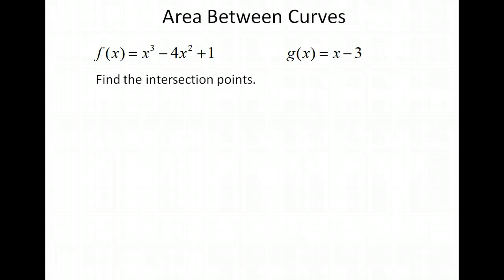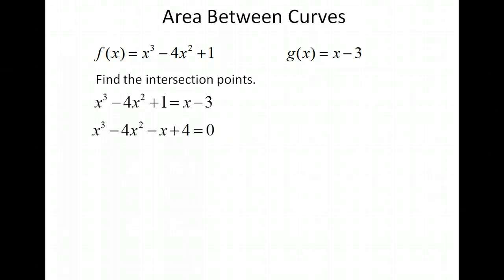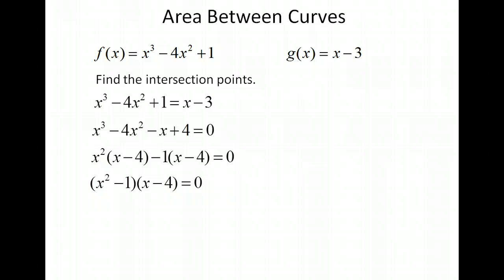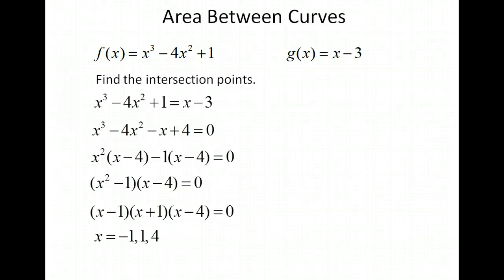Let's go ahead and find our intersection points. We can do that pretty easily by setting the two functions equal to each other and then isolating x. So we're going to bring our x minus 3 over to the other side. For this particular function, we can factor this out — factoring x squared out of the first two terms, negative 1 out of the last two terms, and then regroup. The x squared minus 1 can be factored one more time. So we have three intersection points where x equals 1, negative 1, and positive 4.